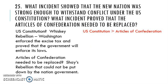Question 25 asks what incident showed the new nation was strong enough under the U.S. Constitution, and what proved the Articles of Confederation needed to be replaced? For the Constitution, it's the Whiskey Rebellion. There was an excise tax placed on whiskey, and corn farmers in Pennsylvania rebelled, yelling 'no taxation without representation.' Hamilton advised Washington to enforce the tax, Washington gathered a militia to go to Pennsylvania, the rebels put down their arms and went home — proving the government will enforce its laws and the Constitution is strong.